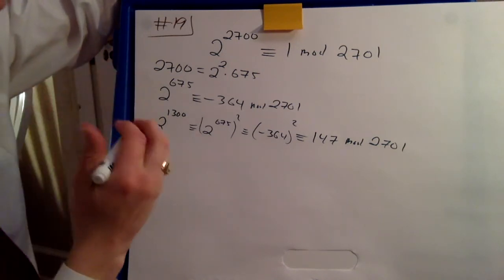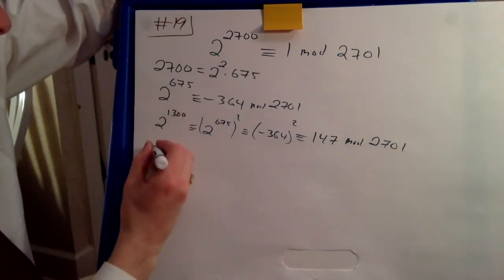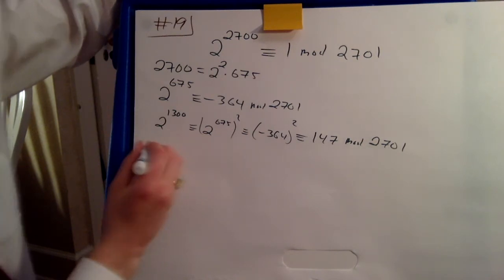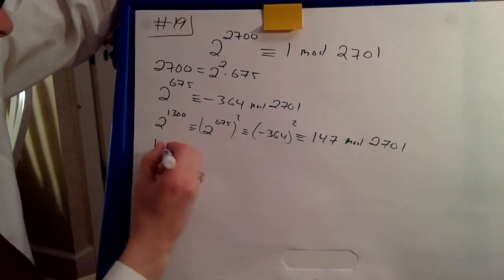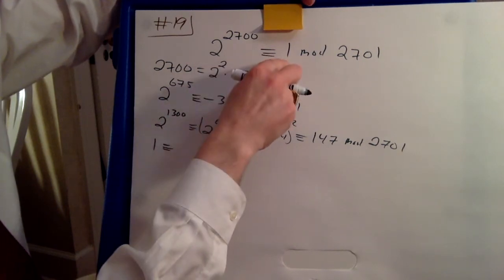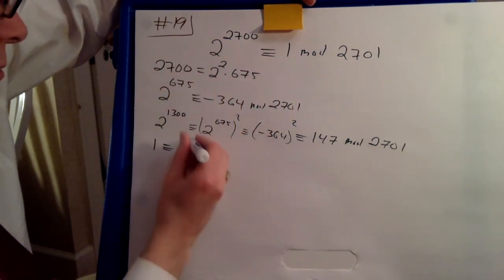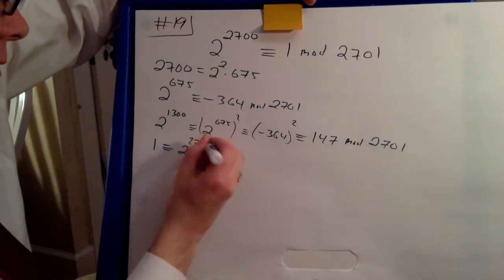Oh well, so now let's square this one more time. Then you know that one, which is that one, is 2 to the 2700.